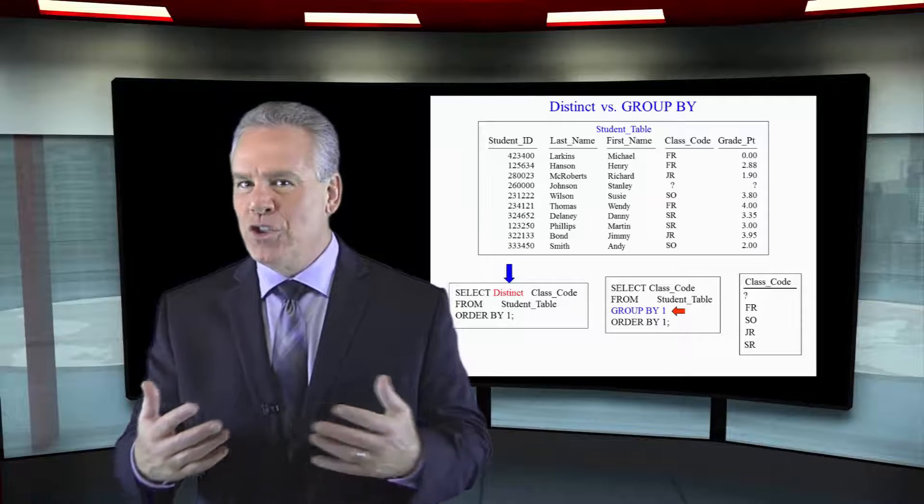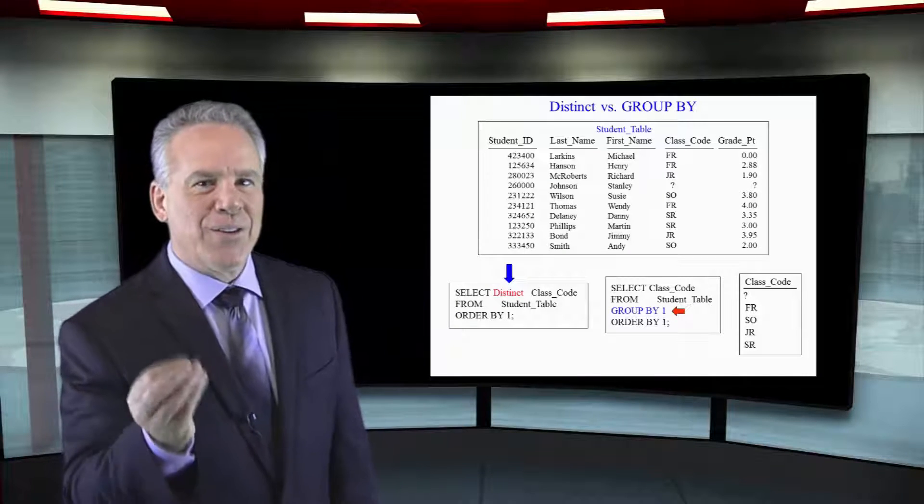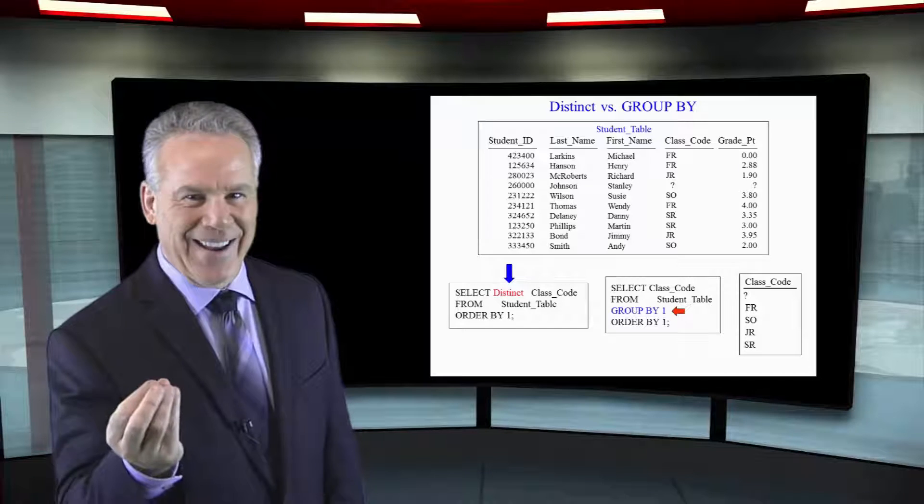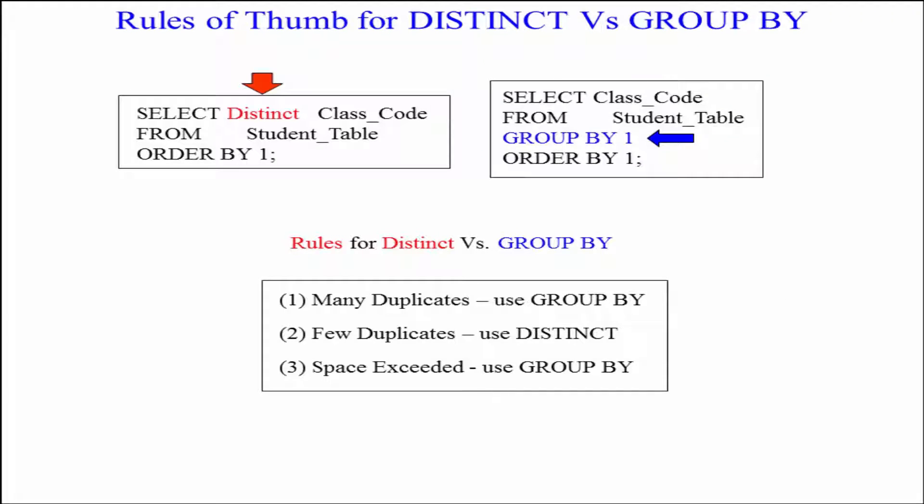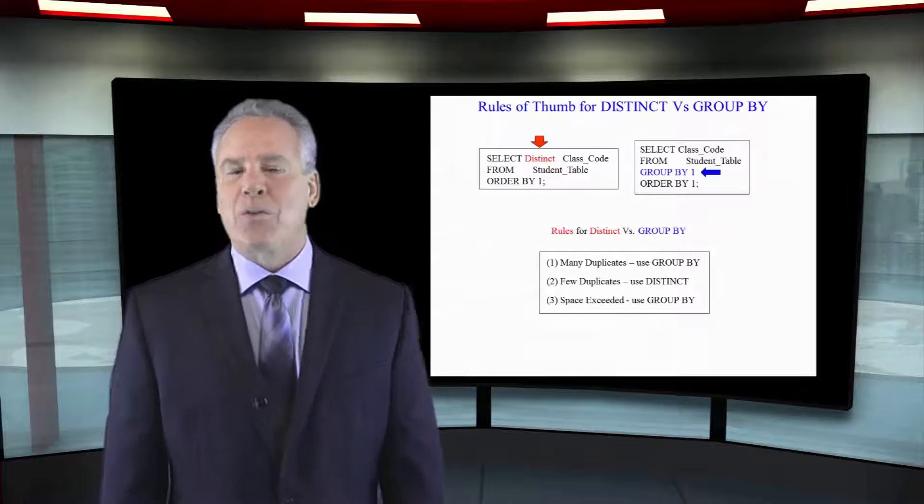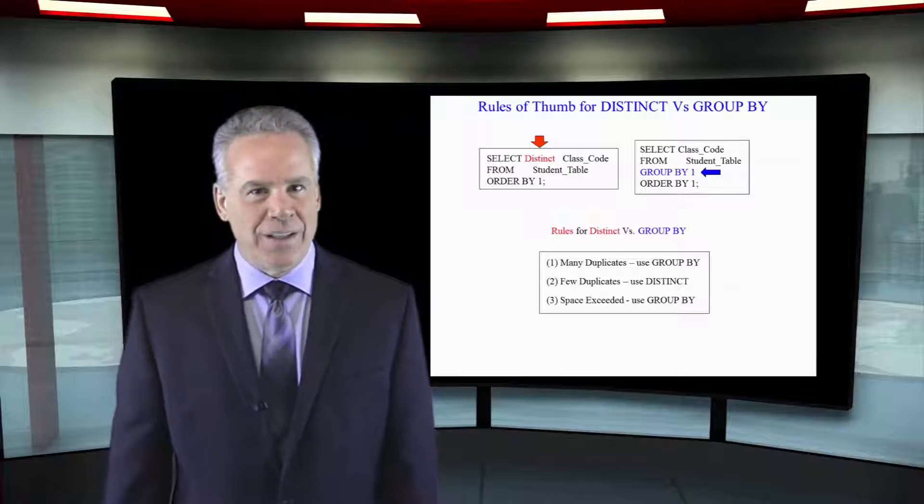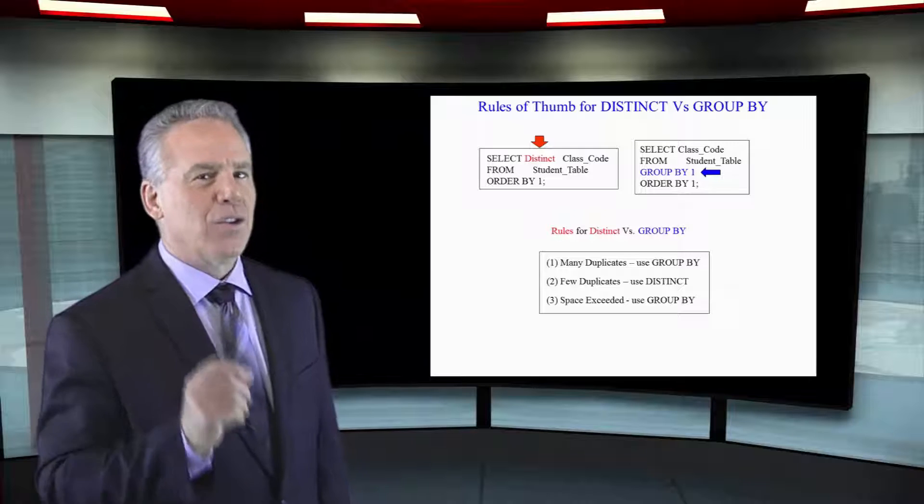But which should you use? When in doubt, go with group by. But here's a little bit more to it. If you've got many duplicates, you want to use the group by. If you've got just a few duplicates there, distinct actually could be a little bit better. If you're running out of space, you're getting aborted on that spool space, I want you to think about using the group by command. Remember, both are equivalent, but you're probably better off using group by.